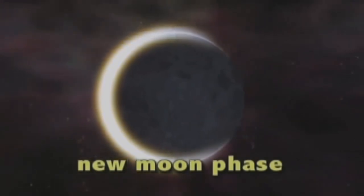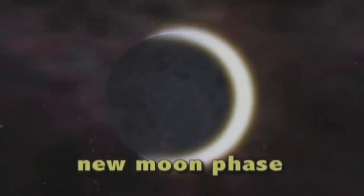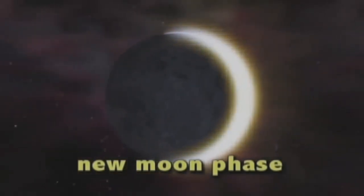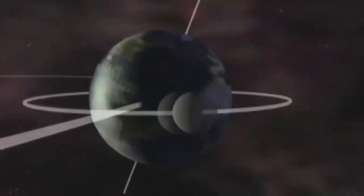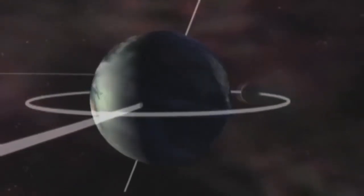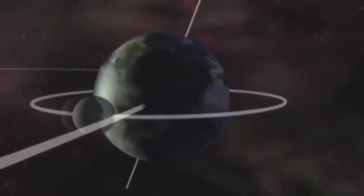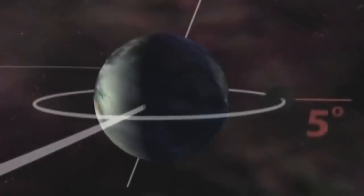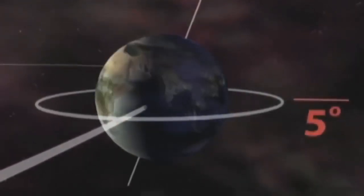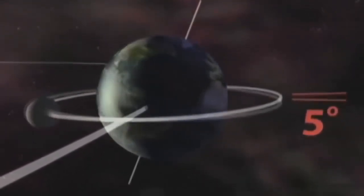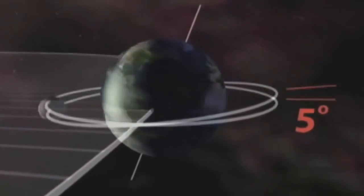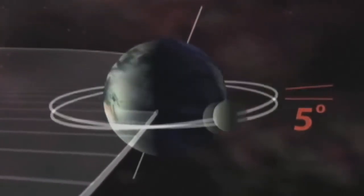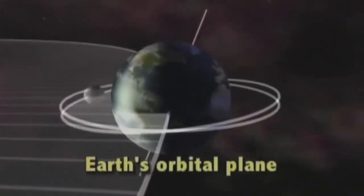An eclipse of the Sun can only occur when the Moon is new. However, not all new moons produce a solar eclipse. The Moon's orbit around the Earth is tilted about 5 degrees to the plane of the Earth's orbit around the Sun. As a result, the Moon spends most of its time either above or below the Earth's orbital plane.